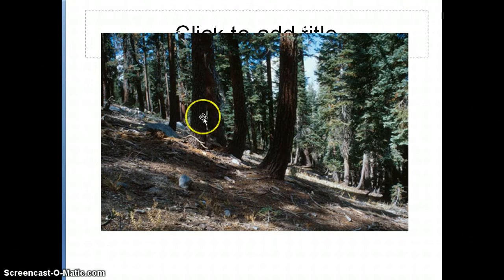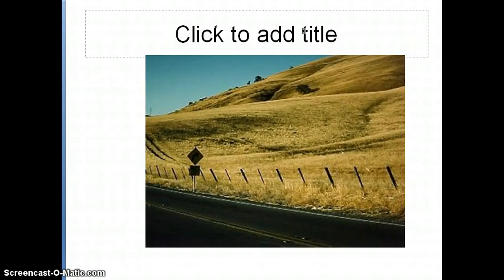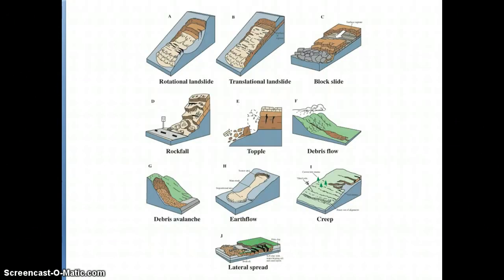Some landforms created from creep are what are called gunstock trees or bent trees — over time as the soil moves, the tree tends to right itself because of its attraction toward the sun via photosynthesis. Here's a final example of creep: fence lines that are moving outward — they were probably vertical when placed in the ground but have moved as the soil has moved. Make sure you take a look at the example on page 356, which shows the difference between types of movement, speed, and water content, and has a great diagram of which are drier, which are wetter, which are slow, and which are fast. Really understand the morphology of a rotational slump versus a translational landslide.